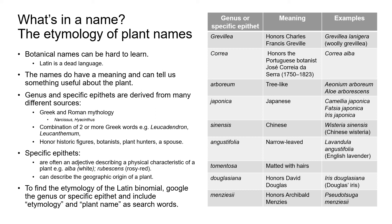Sometimes the genus or specific epithet honours a historic figure, a botanist, a plant hunter, or perhaps somebody's spouse. Specific epithets are often an adjective describing a physical characteristic of a plant. For example, alba means white, rubescens means rosy red, and alba tomentosa means white and hairy. The specific epithet may also describe the geographic origin of a plant — for example, sinensis means Chinese or from China, japonica means Japanese, and hespero means western.